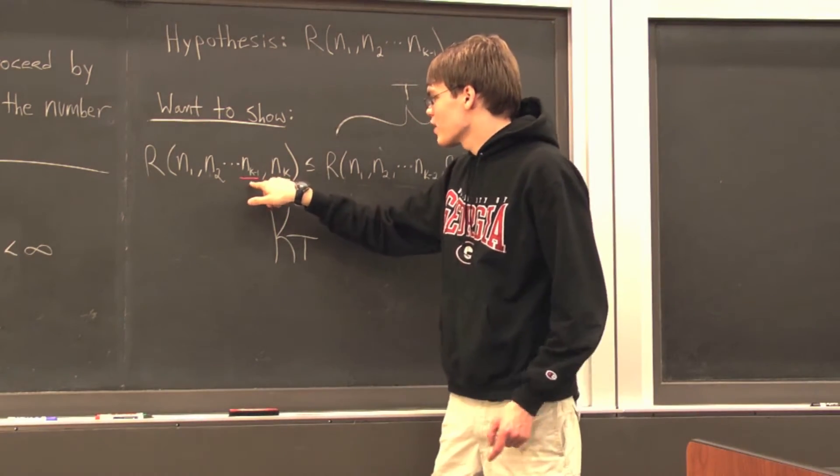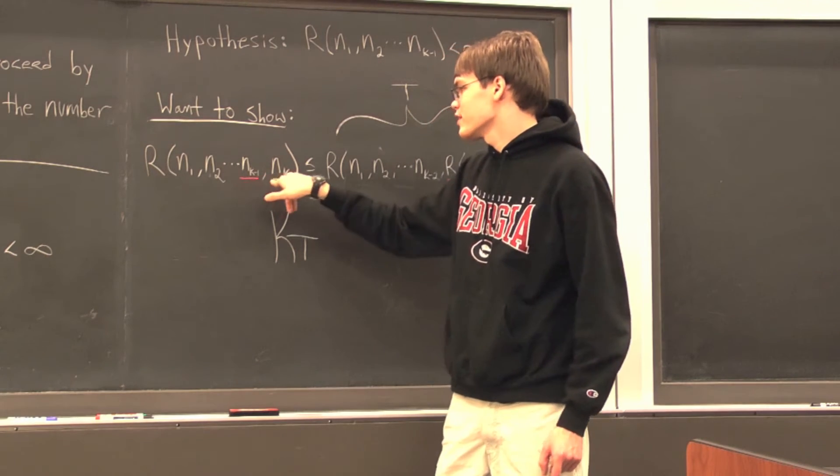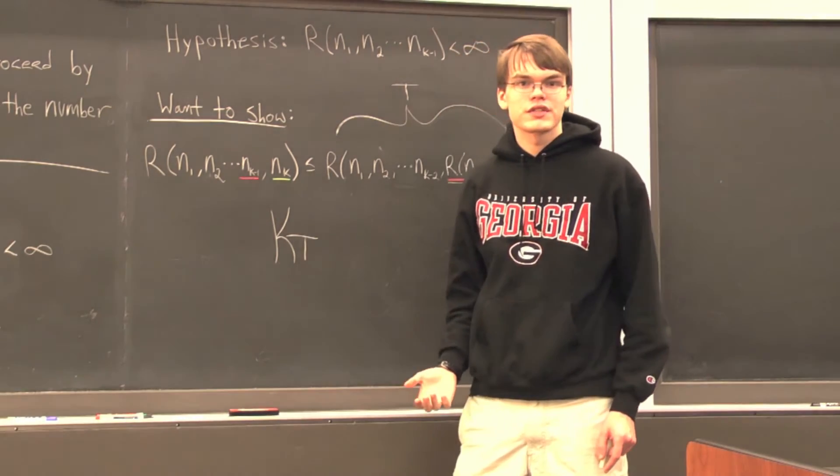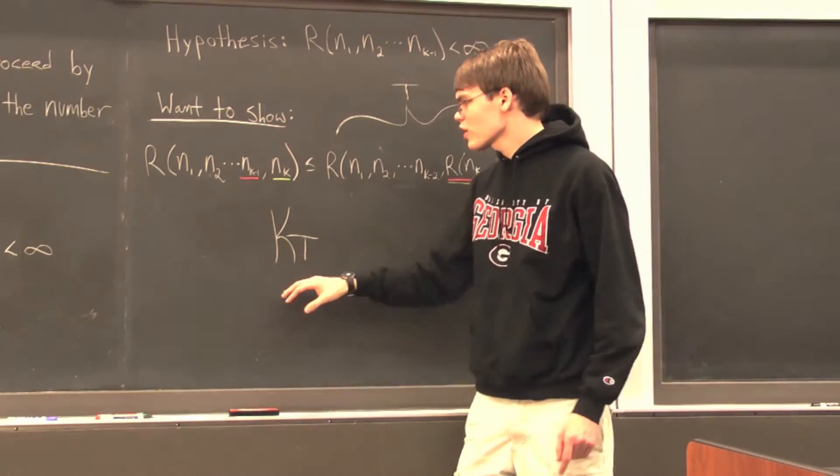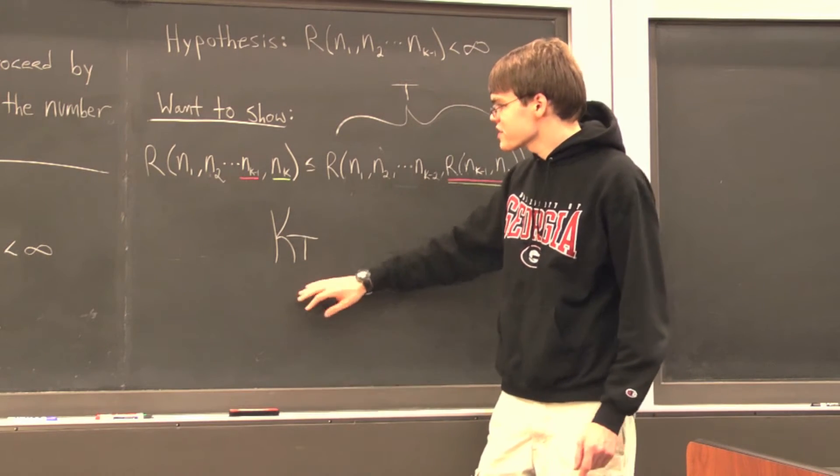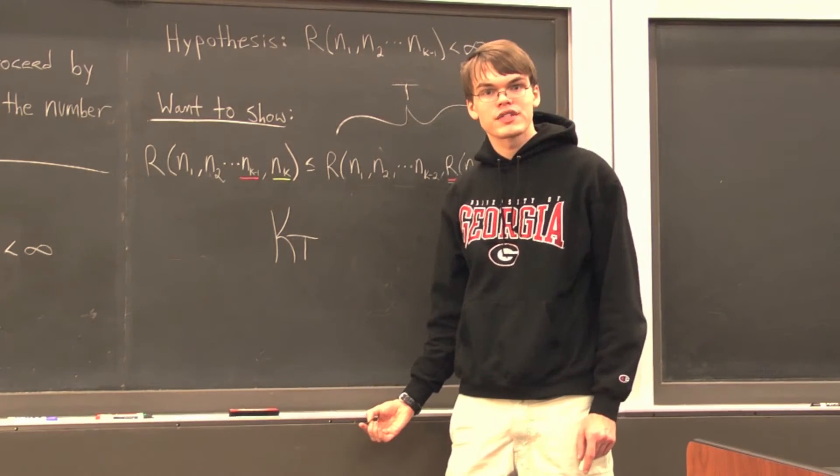And so what that means is that any edges that are red and any edges that are green, they suddenly both appear to be red edges. And so all of a sudden we have, instead of a k coloring on Kₜ, we instead have a k minus 1 coloring on Kₜ.